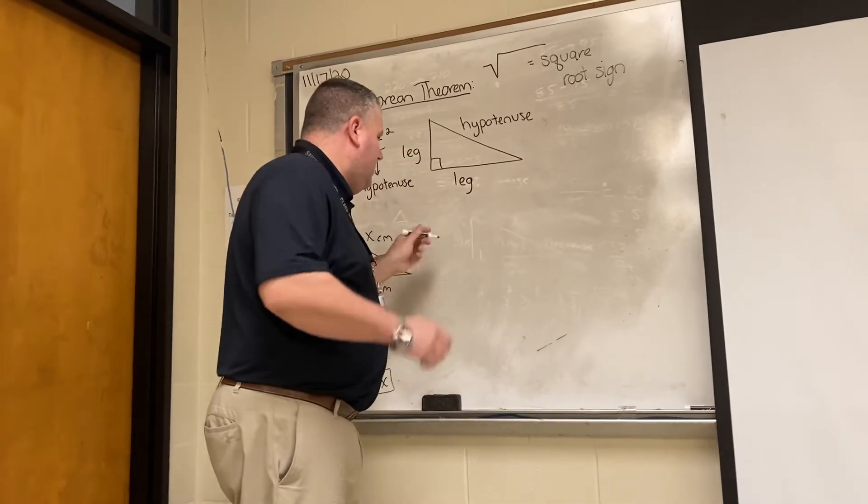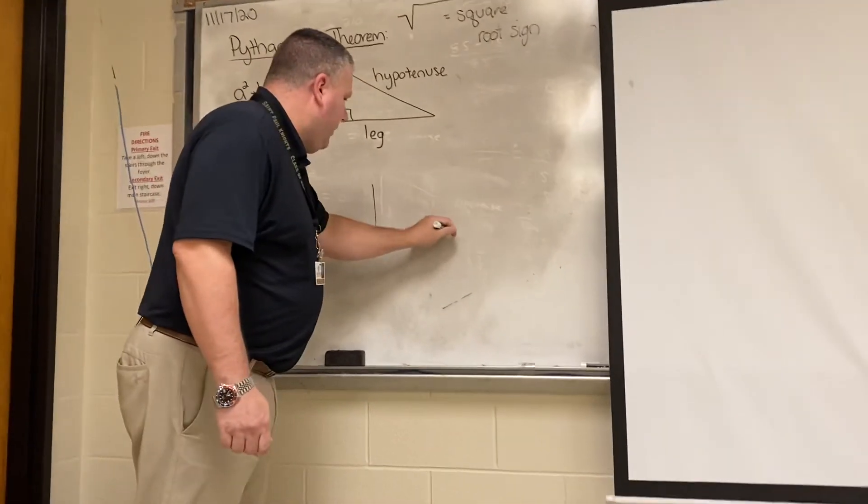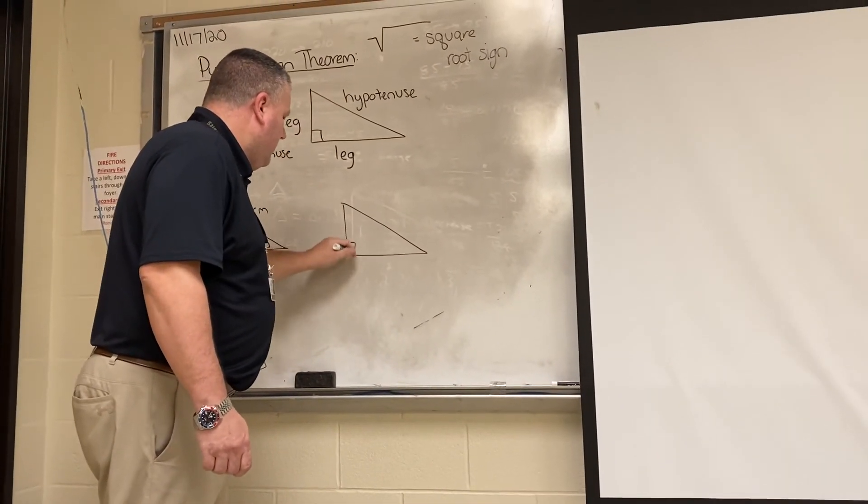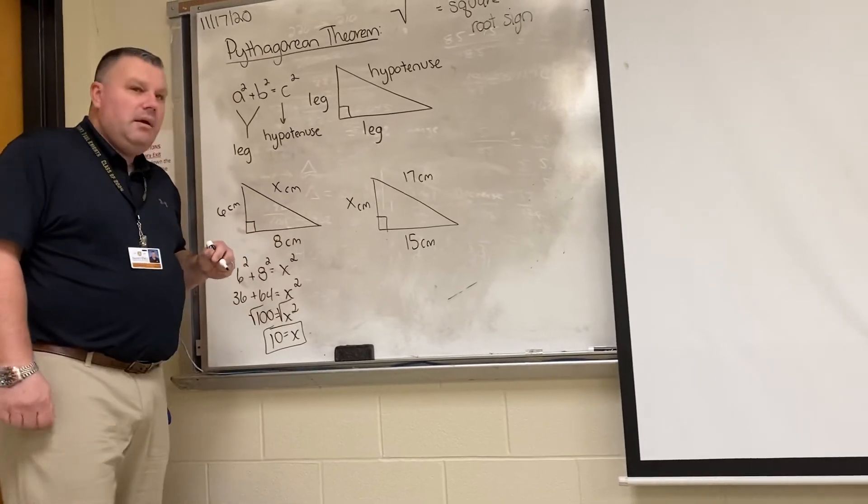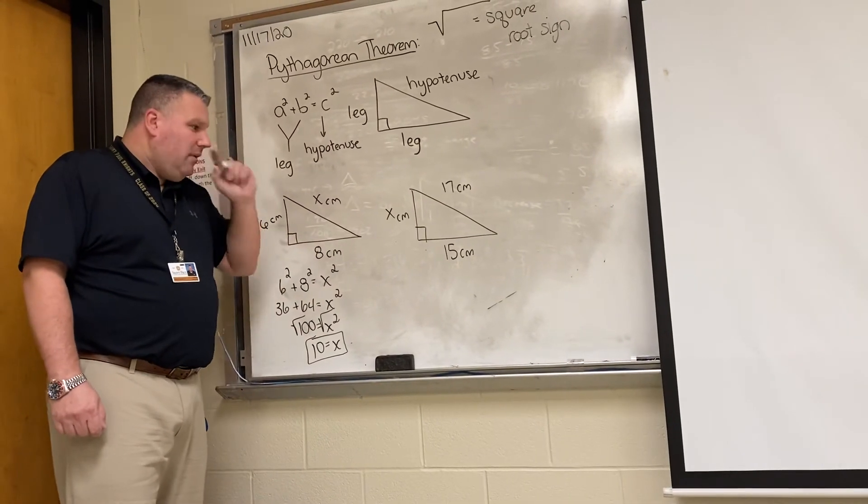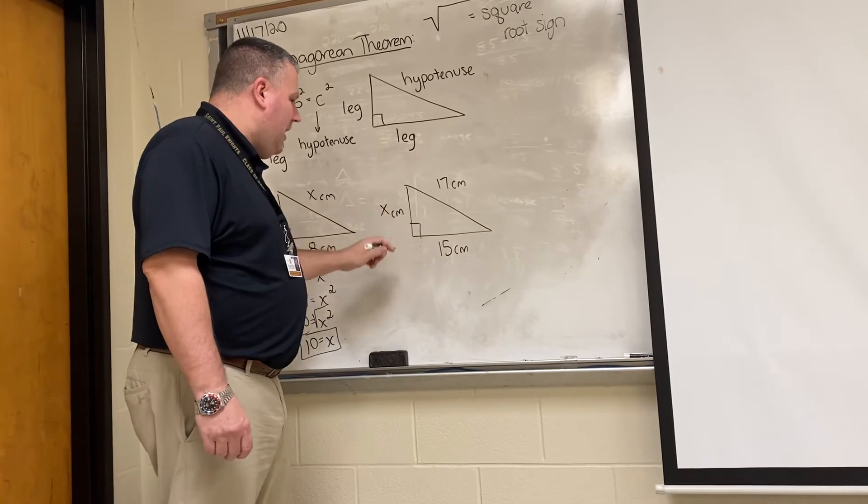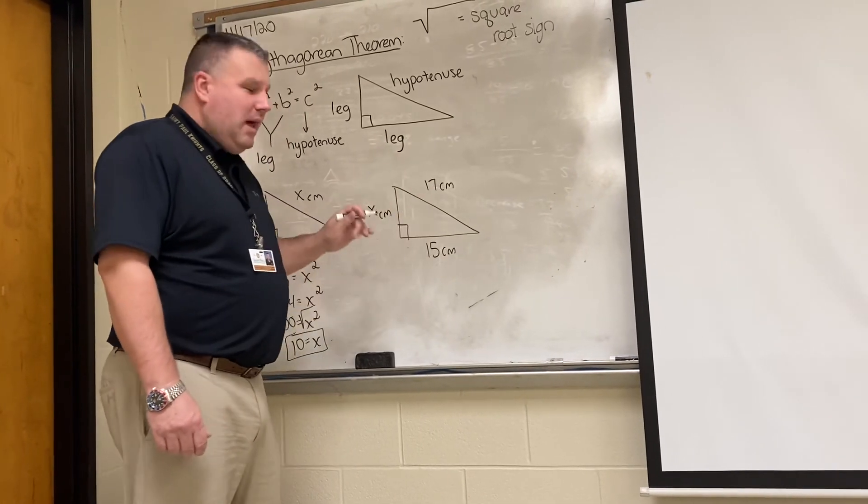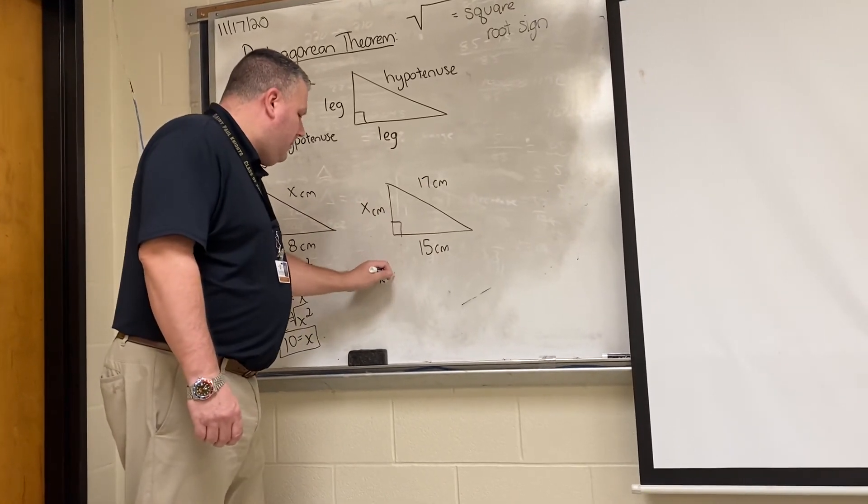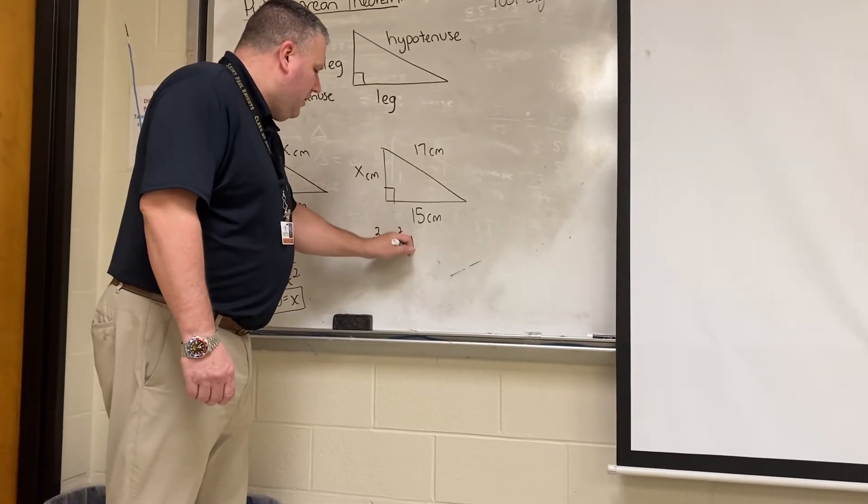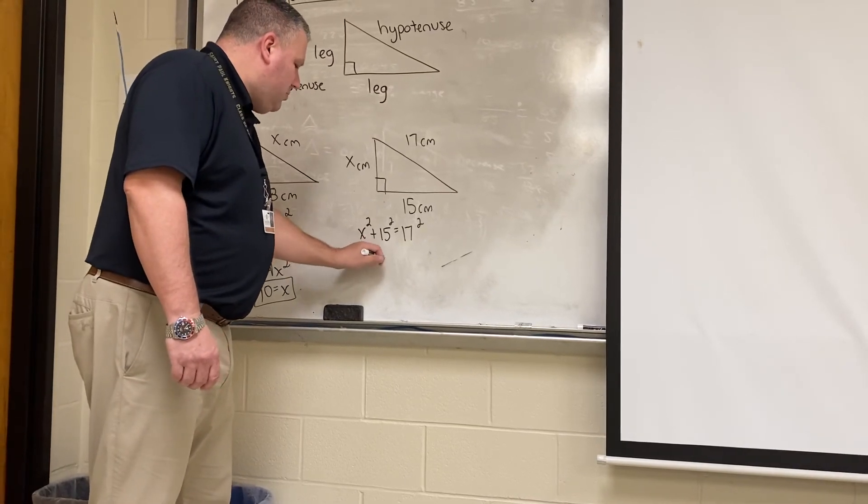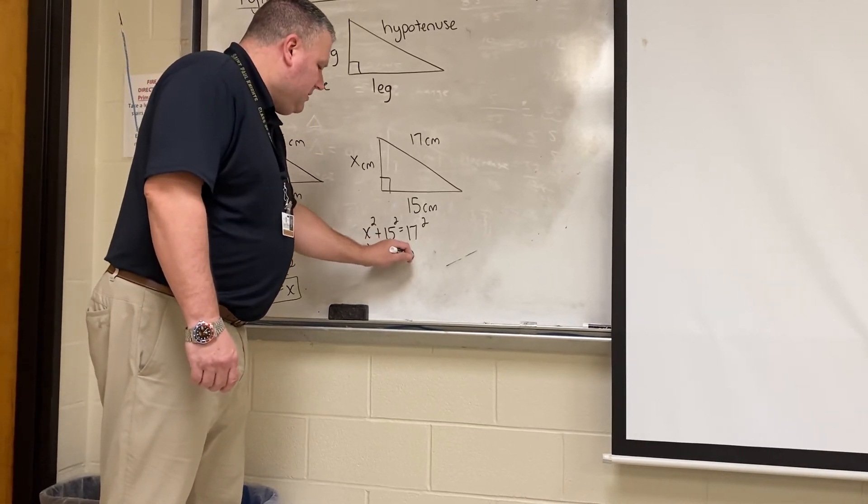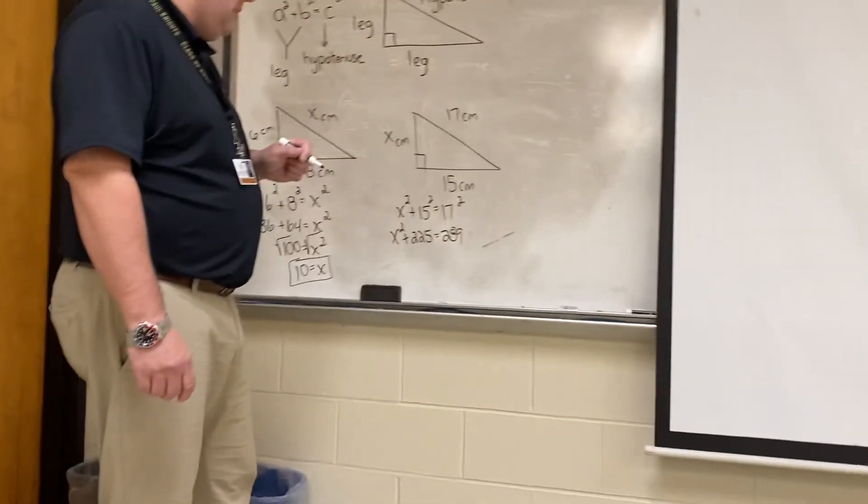This one's a little bit more advanced. Let's take a look at this example here. This is 15 centimeters. This is 17 centimeters. This is x centimeters. So if I go through and write this down, again, it's always equal to the hypotenuse. So it would be x squared plus 15 squared is equal to 17 squared. So that's x squared plus 225 is equal to 289.